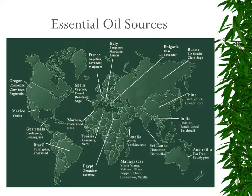Madagascar is known for ylang ylang, black pepper, clove, cinnamon, and vanilla. India is known for its jasmine, sandalwood, and patchouli. China for eucalyptus and ginger root. And Russia for fir needle and clary sage. Be careful — there are many people who produce essential oils and you need to buy them from a reliable source that are deemed grade A in order for them to have any therapeutic value at all.